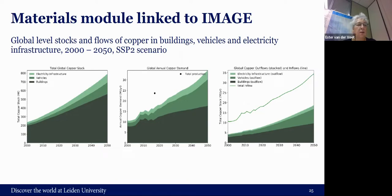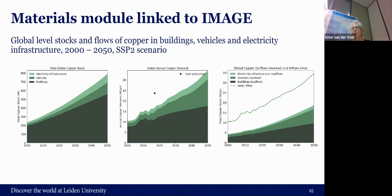Here you see results from our own calculations about copper at the global level. On the left is the copper stock — still expected to grow a lot, especially for buildings, which are the main application. In the demand, vehicles are relatively more important because of their shorter lifespan, so larger flows are needed to maintain a smaller stock. On the right-hand side you see the outflow growing, and also growing relative to the inflow. But since the stock is not saturating yet, the outflow hasn't caught up with the inflow, and we are far away from a circular economy yet.